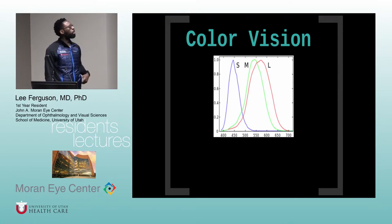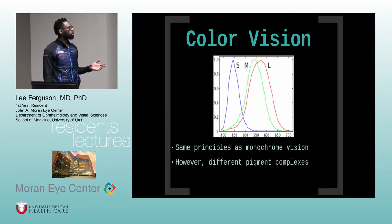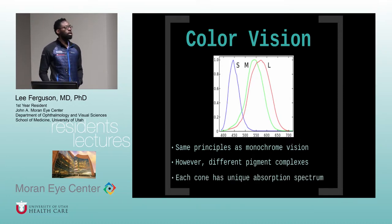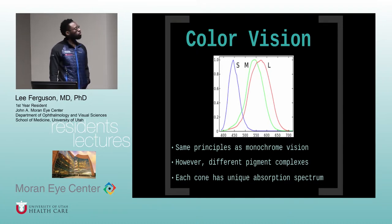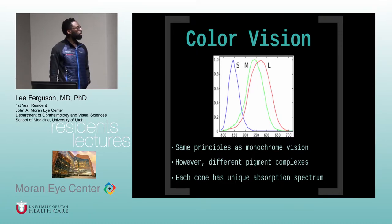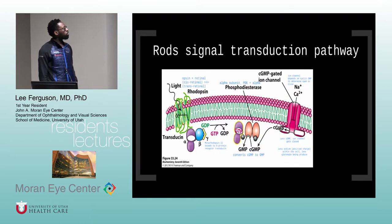For color vision — how is it different from monochromatic vision? It has the same principles; however, the only difference is in the actual opsin molecule itself. Each cone has a specific spectrum of absorption for light, and that's why you have the different colors — specifically the three different colors that are known to be specific to cones.